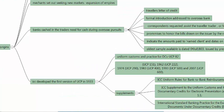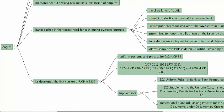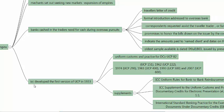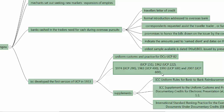As the use of the letter of credit started growing by leaps and bounds, the International Chamber of Commerce developed the first version of UCP in 1933. UCP stands for Uniform Customs and Practices for Documentary Credits. The first one is called UCP version 82, ICC Publication Number 82, published in 1933. Later, UCP 151, UCP 222, UCP 290, UCP 400, UCP 500 were issued, and then in 2007 we have UCP 600.